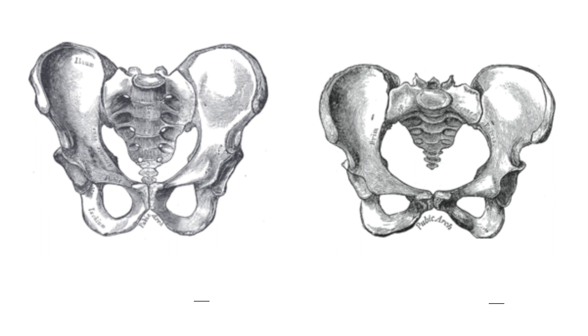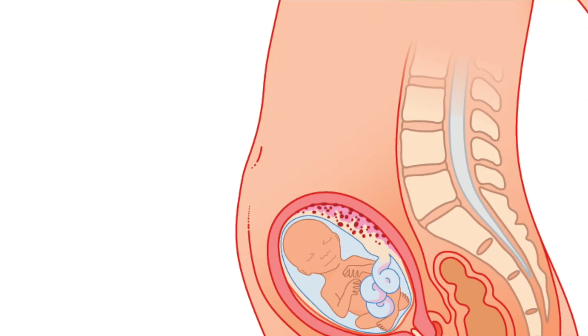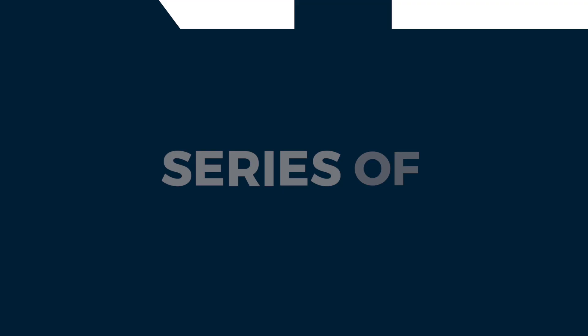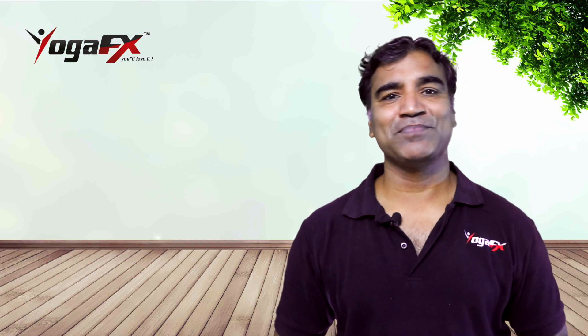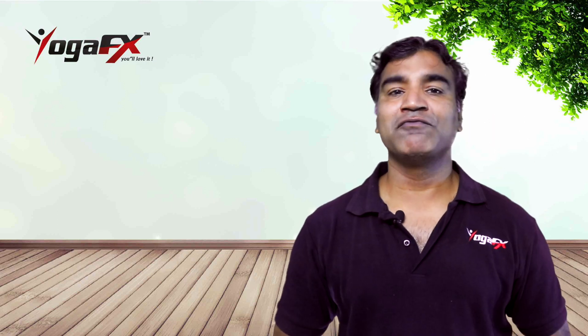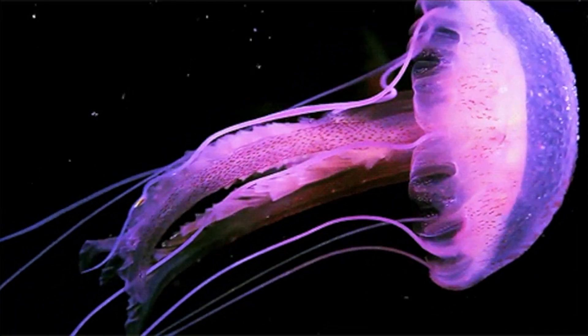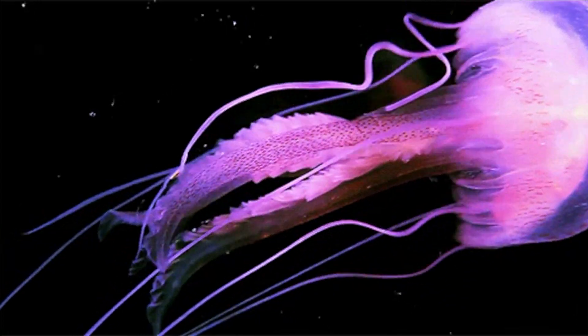The female skeleton, on the other hand, has a broader pelvis to accommodate pregnancy and childbirth. Our skeletal system is a series of long and short bones connected to each other by joints. Our body depends on this skeletal framework for shape and movement — without it, we would be like a jellyfish: soft and shapeless.